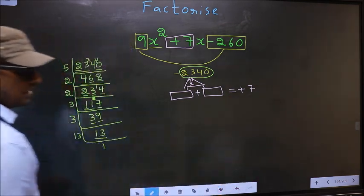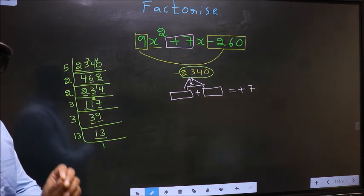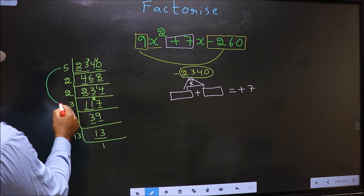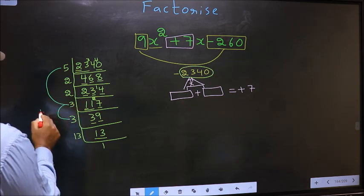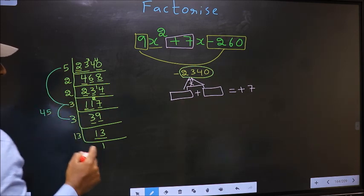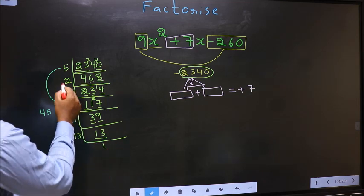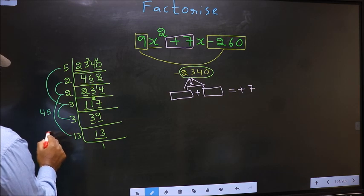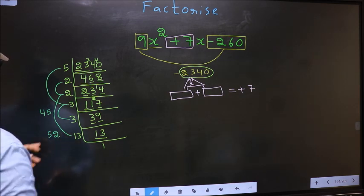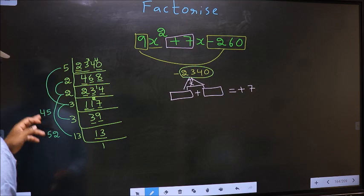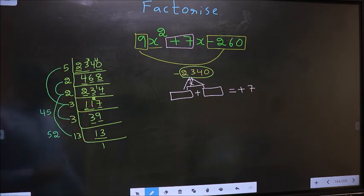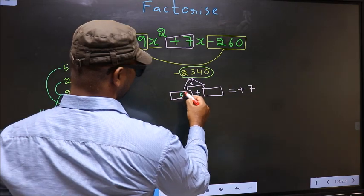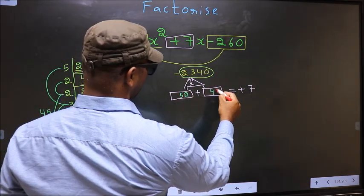Now the two numbers should be 5 into 3, 15 into 3, 45. And the second number is 2 into 2, 4 into 13, 52. 52 minus 45, we get 7. So here you write 52 and here 45.